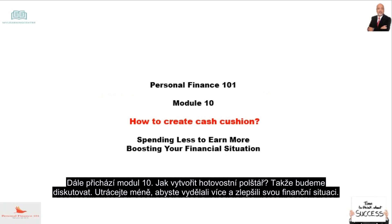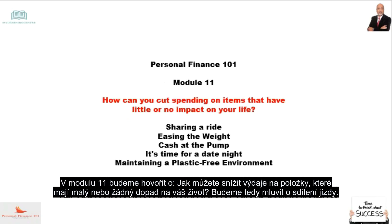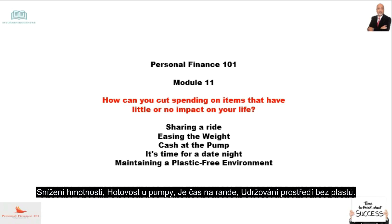Module 10 covers how to create a cash cushion — spending less to earn more and boosting your financial situation. In Module 11, we'll talk about how to cut spending on items that have little or no impact on your life, including sharing a ride, easing the weight, cash at the pump, planning a date night, and maintaining a plastic-free environment.